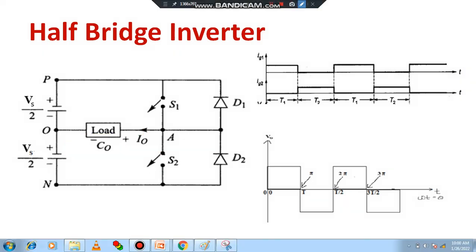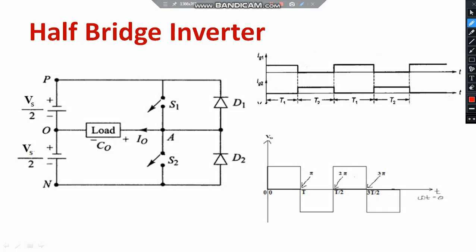How are the switches turned on? Assume that these switches are either MOSFET or IGBT, and they are turned on by providing the suitable gating pulse IG1. To turn on S2, we need to provide IG2. The same is mentioned here, and you can see the output waveforms.